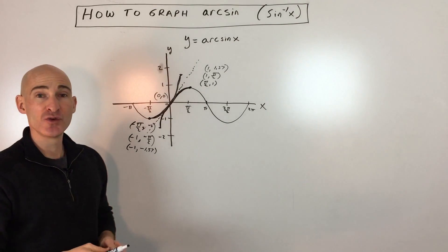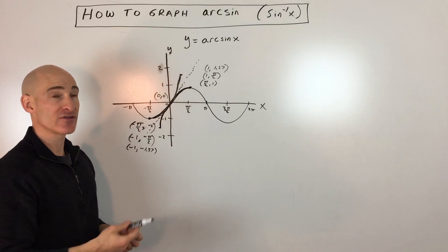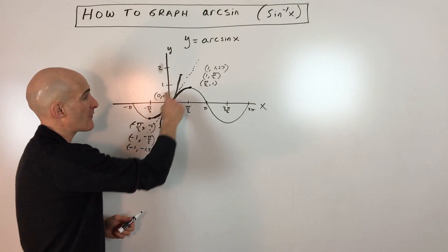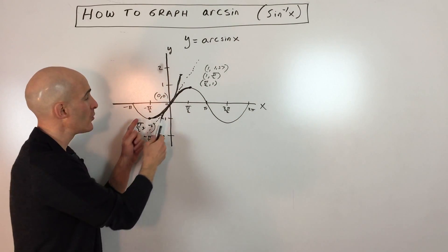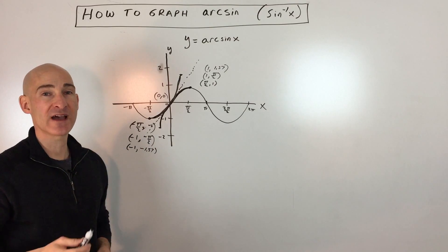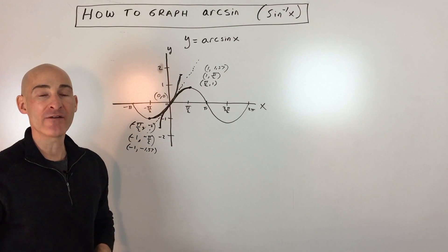That's all you have to do. If you forget how to graph the arcsin or the sine inverse function, go ahead and graph the original graph, restrict the domain from negative π over 2 to positive π over 2, and then switch the x and the y coordinates on these three key points. That'll be a quick way to get the graph.